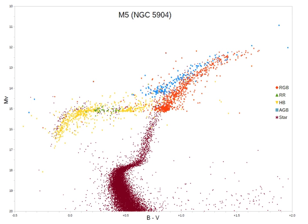Stars on the horizontal branch all have very similar core masses following the helium flash. This means that they have very similar luminosities, and on a Hertzsprung-Russell diagram plotted by visual magnitude the branch is horizontal. The size and temperature of an HB star depends on the mass of the hydrogen envelope remaining around the helium core. Stars with larger hydrogen envelopes are cooler. This creates the spread of stars along the horizontal branch at constant luminosity. The temperature variation effect is much stronger at lower metallicity, so old clusters usually have more pronounced horizontal branches.